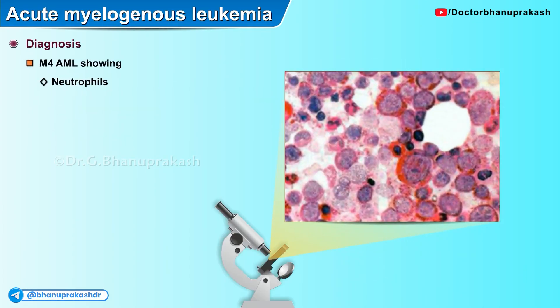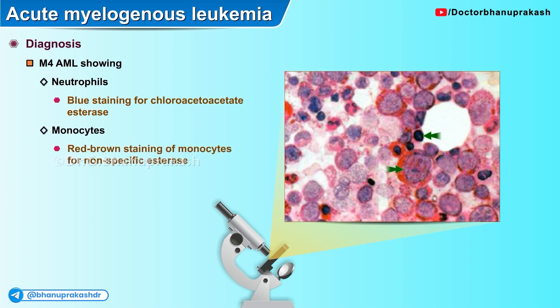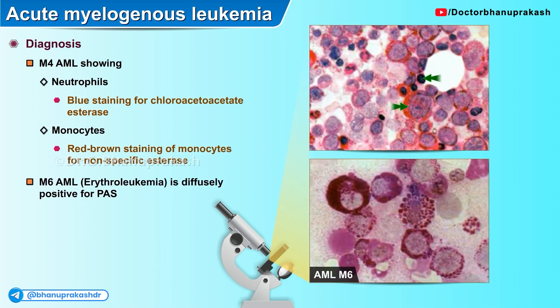Another histopathological image shows blue color due to staining of chloroacetate esterase, present in neutrophils, whereas red-brown staining is conclusive of non-specific esterases present in monocytes. Another histopathological image shows the M6 variant of acute myelogenous leukemia, which is diffusely positive for periodic acid-Schiff (PAS) stain — the only variant where PAS is positive.